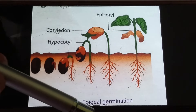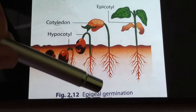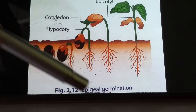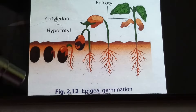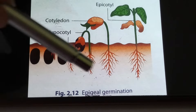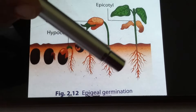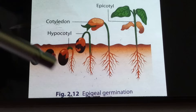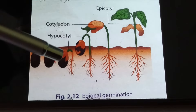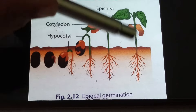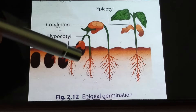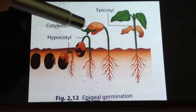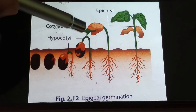In epigeal germination, the word 'epi' means above and 'geo' means soil. If the cotyledon is pushed above the soil during germination, it is known as epigeal germination. As the plant grows from the seed, the radicle develops first into the root, and then the shoot is pushed above the soil. Here we can see the cotyledon being pushed above the soil, providing nourishment to the plant while new leaves develop.